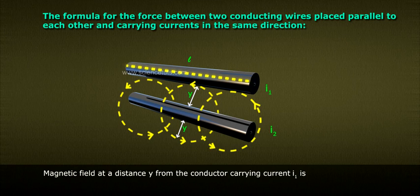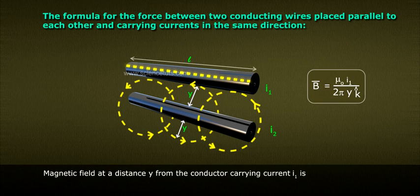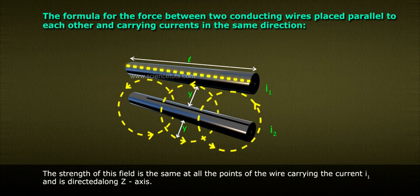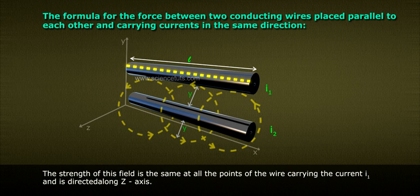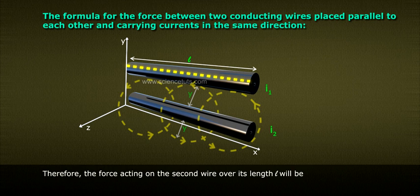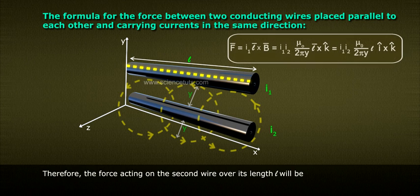Magnetic field at a distance Y from the conductor carrying current I1 is B bar equals to mu naught I1 by 2 pi Y k cap. The strength of this field is the same at all the points of the wire carrying the current I2 and is directed along Z axis.